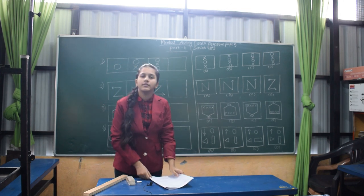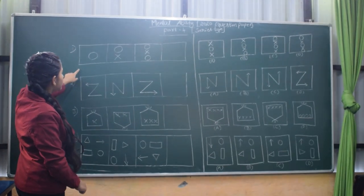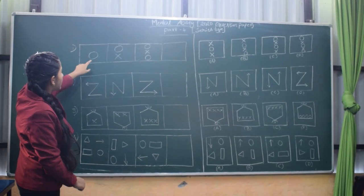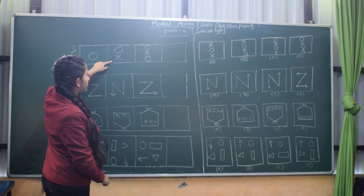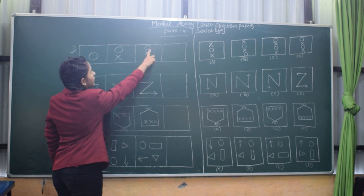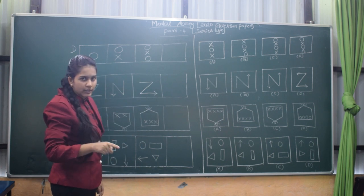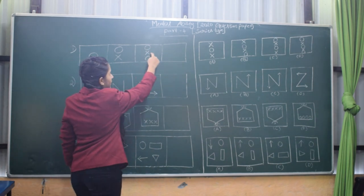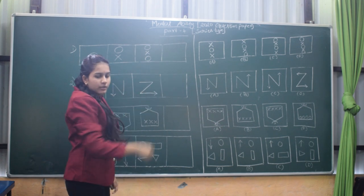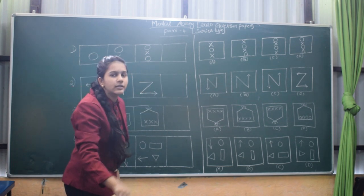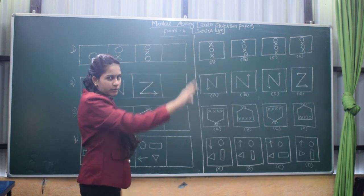Let's see how to answer these questions. First, let's go to the first question which has a circle in the first figure, a circle along with an X in the second figure, and here there is one circle below, one X, and one circle. So now we should get a 4th figure. First we will write the figure and then compare our answer with the 4 options given.